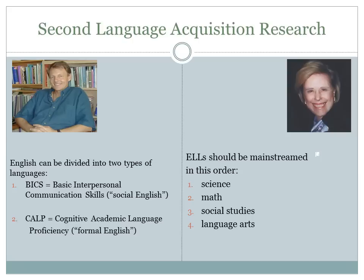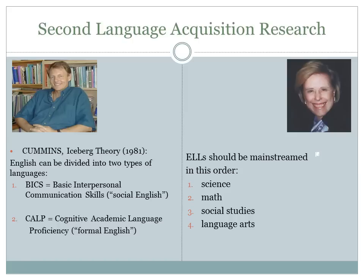It doesn't matter whether you are thinking about language arts or ESL — in both fields, the teacher needs to be focused on teaching academic English. Jim Cummins' Iceberg Theory differentiates between BICS, or the English used to communicate in informal social situations, and CALP, or the English used in academic environments.